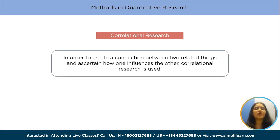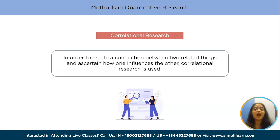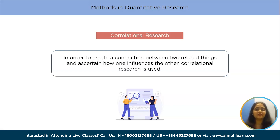First is correlational research. In order to create a connection between two related things and assert how one influences the other, correlational research is used. A researcher will need at least two different groups to do this. Although this kind of research does not go as far as to analyze various patterns, it will be able to spot trends and patterns in the data.